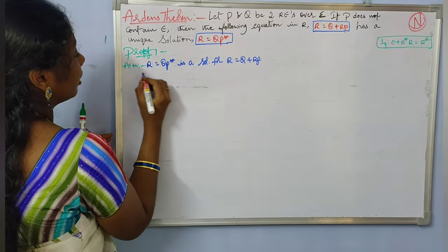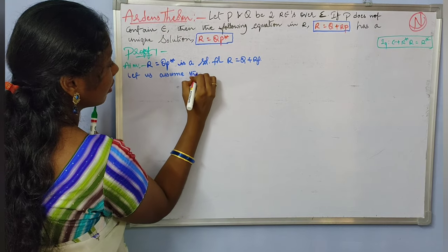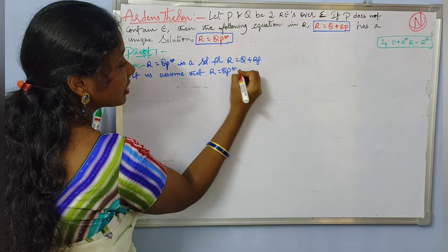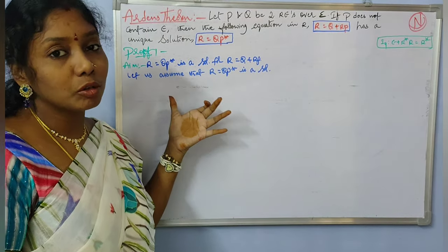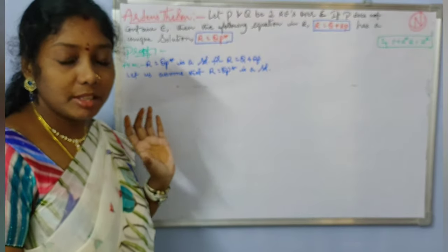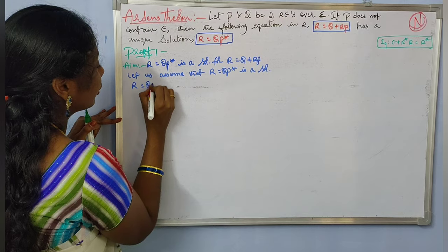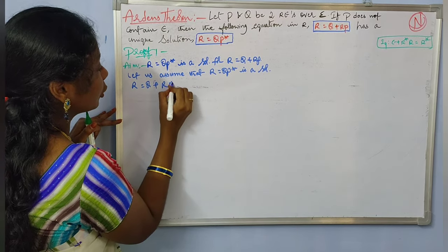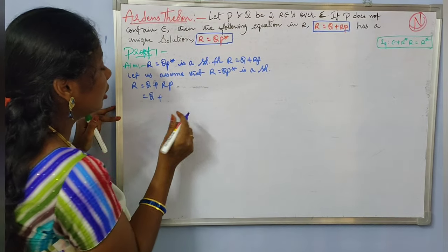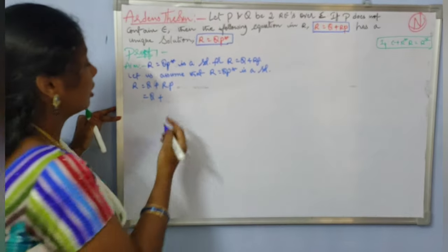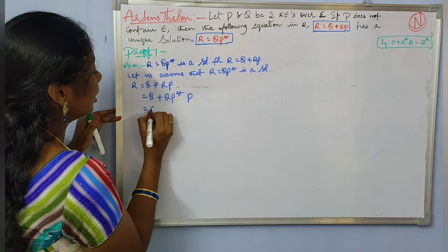We are assuming that R equal to QP star is a solution. We will check whether our assumption is true. If our assumption is true, then we have proved it; if not, we conclude this is not a solution. Consider the equation R equal to Q plus RP. Since we assume R equal to QP star, we replace R with QP star in the equation. Here I can take Q as common.